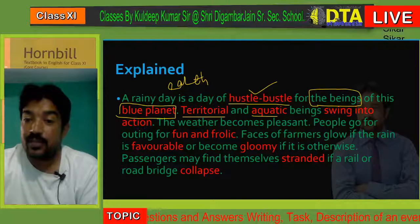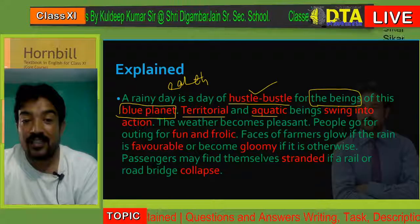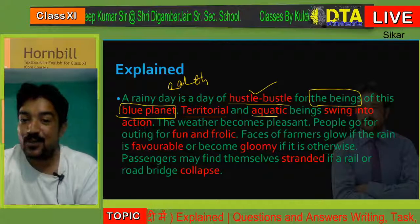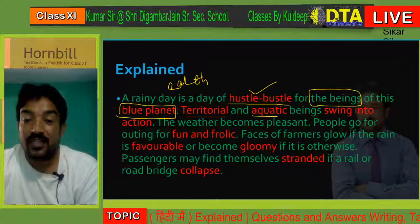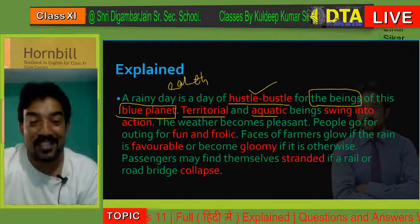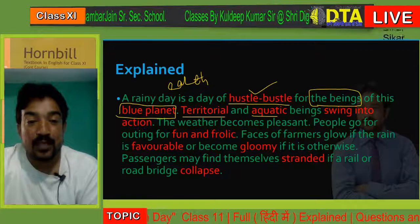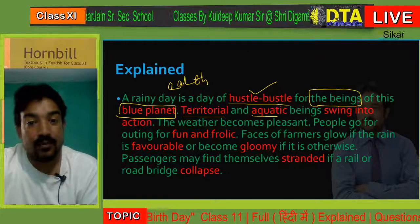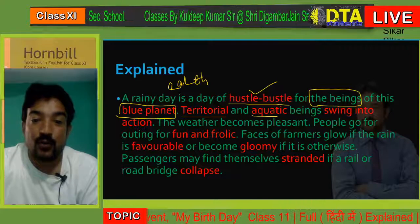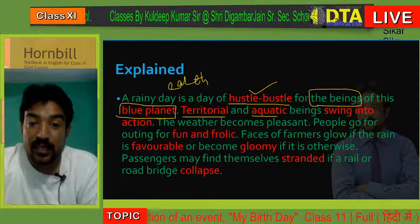Faces of farmers glow if the rain is favorable — the farmers' faces shine if the rain is in their favor. And become gloomy if it is otherwise — they become sad if the rain is not favorable. Favorable means in one's favor, and otherwise means against. Glow means a shining, happy face, and gloomy means a sad face. Passengers find themselves stranded — passengers are the persons who travel on the way. When bridges collapse, passengers feel stranded.